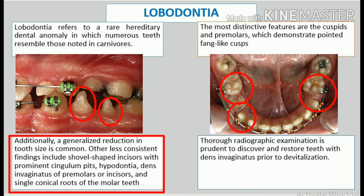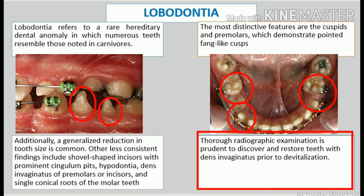Other findings include hypodontia, dens invaginatus of premolars or incisors, and single conical roots of the molar teeth. Thorough radiographic examination is prudent to discover and restore teeth with dens invaginatus prior to devitalization.